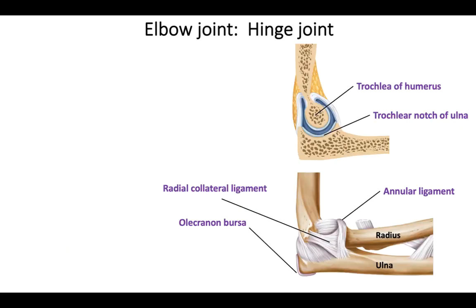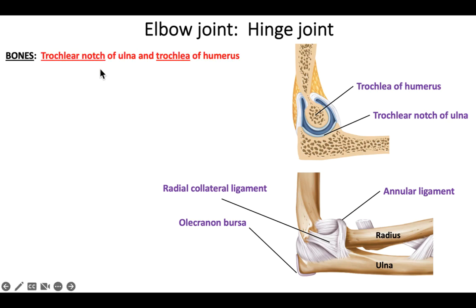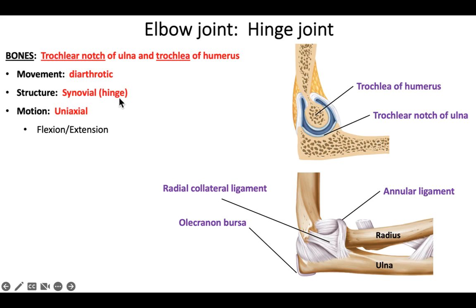The next joint is the elbow. There are actually two joints here. There's a hinge joint that allows flexion and extension, and a pivot joint that allows pronation and supination. The hinge is formed between the trochlear notch of the ulna and the trochlea of the humerus. The ulna also has the olecranon — the bony point of the elbow. The hinge joint is diarthrotic, synovial, hinge type, and uniaxial, allowing flexion and extension.